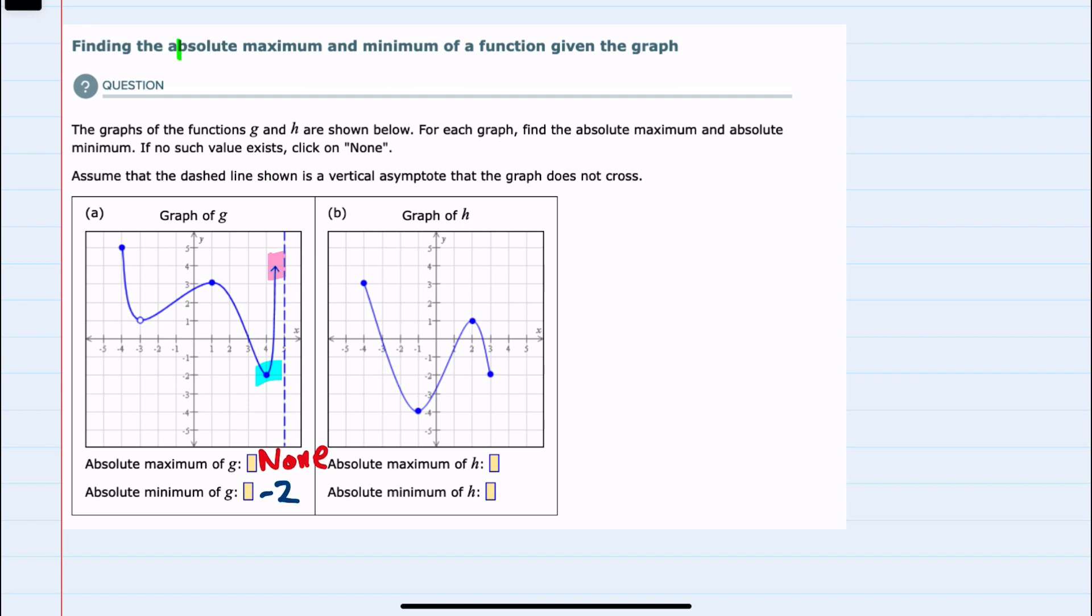Looking at the graph of h, both the left-hand side and the right-hand side have definite stopping points. So we will have an absolute maximum, or the highest value that this graph ever achieves is here, where it has the value of 3 as the absolute maximum.